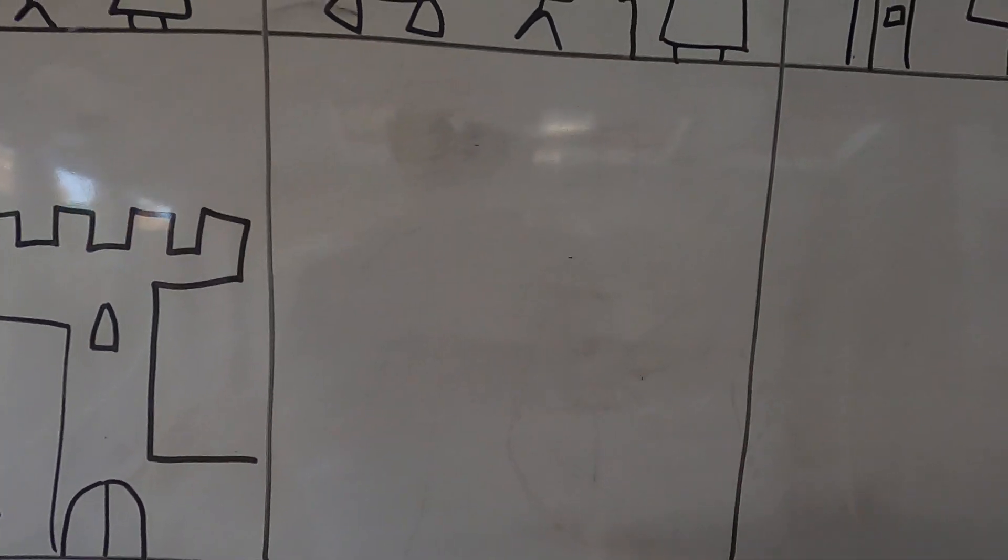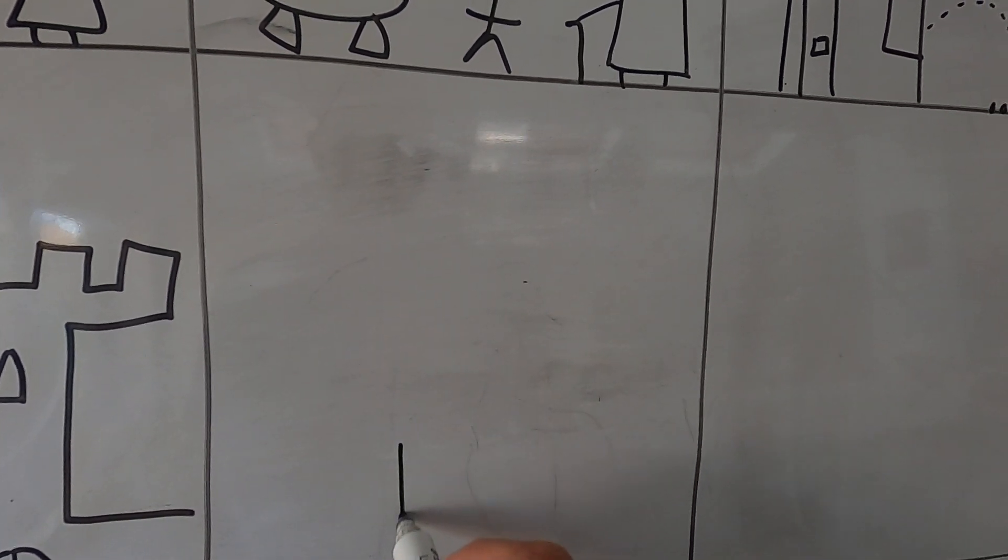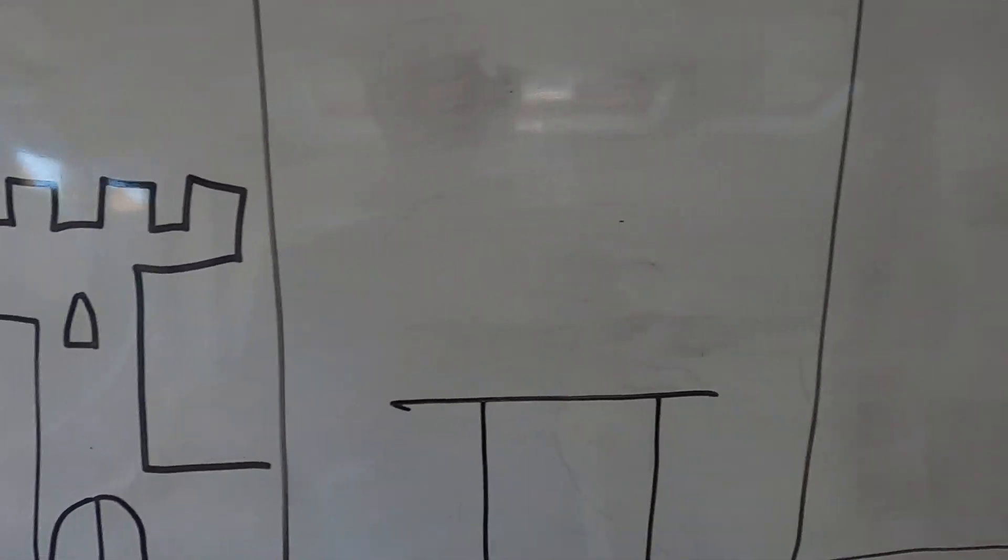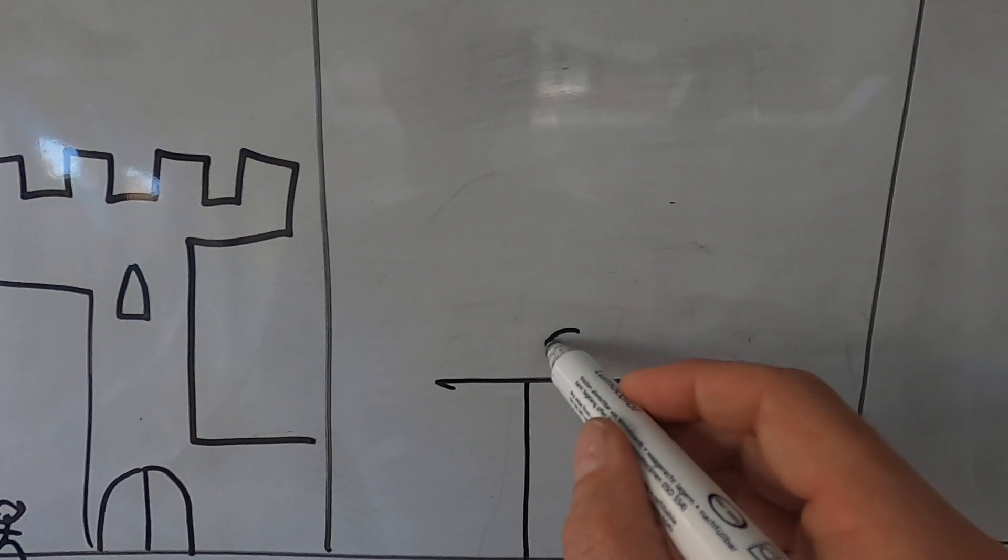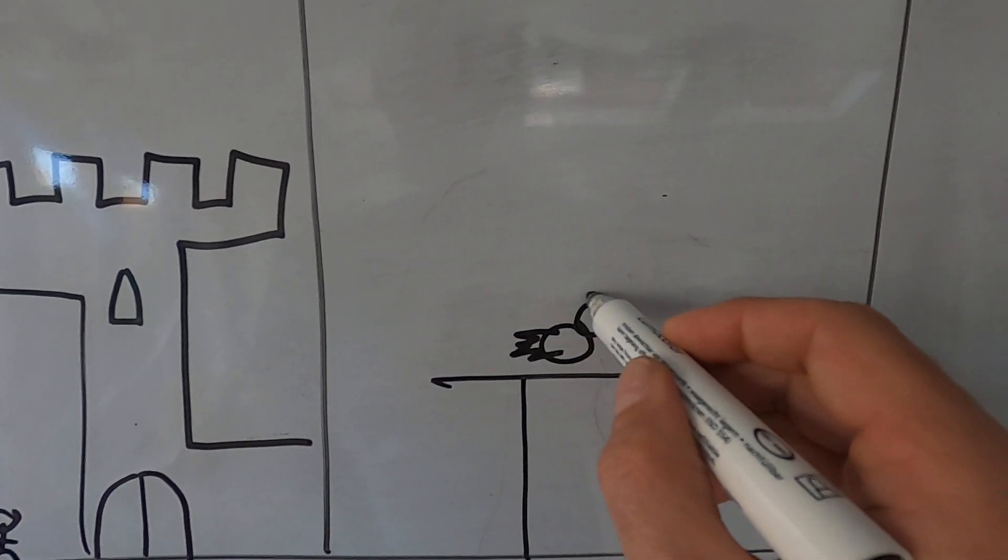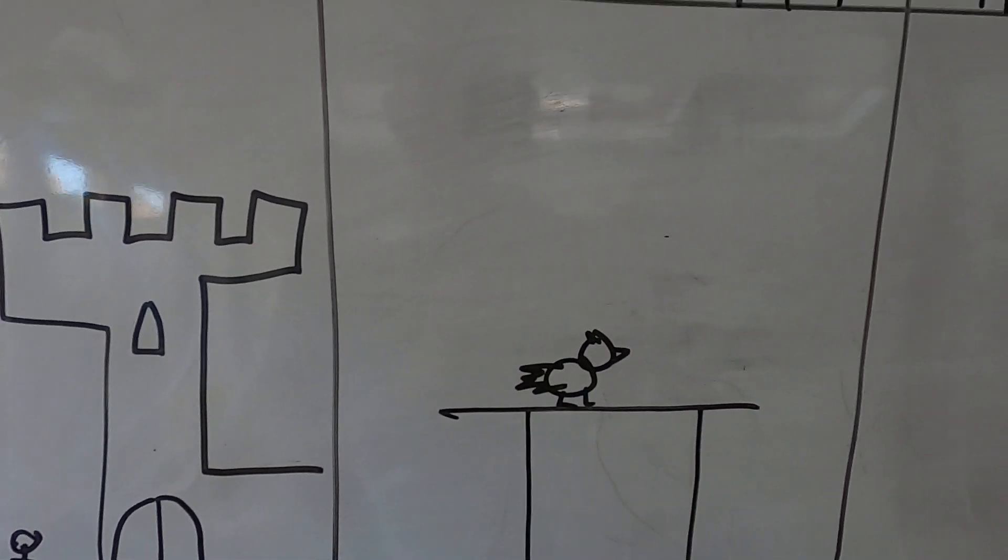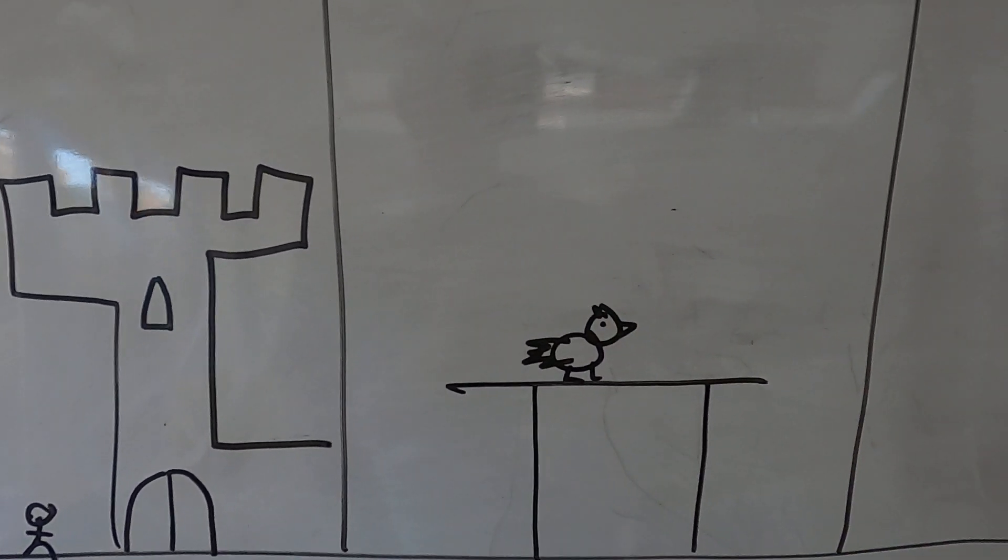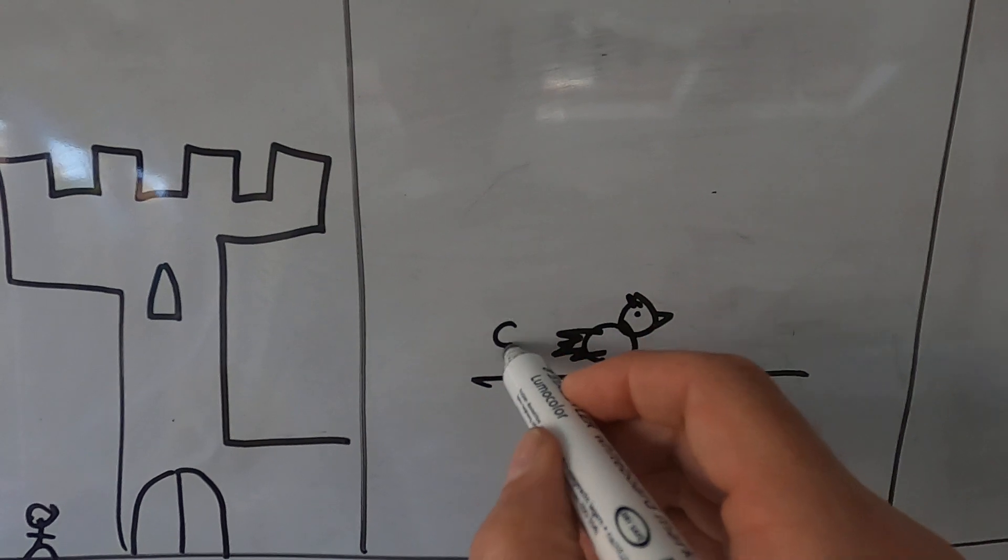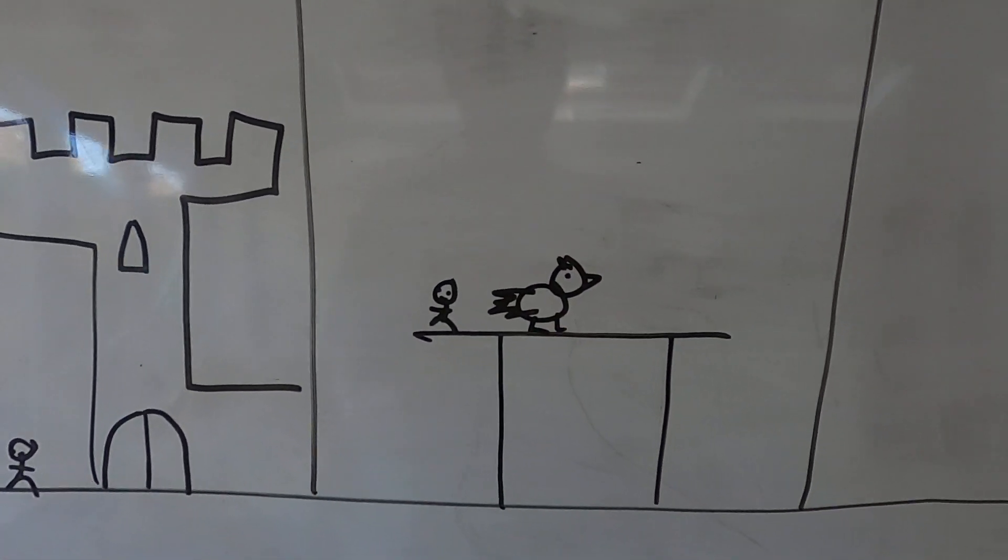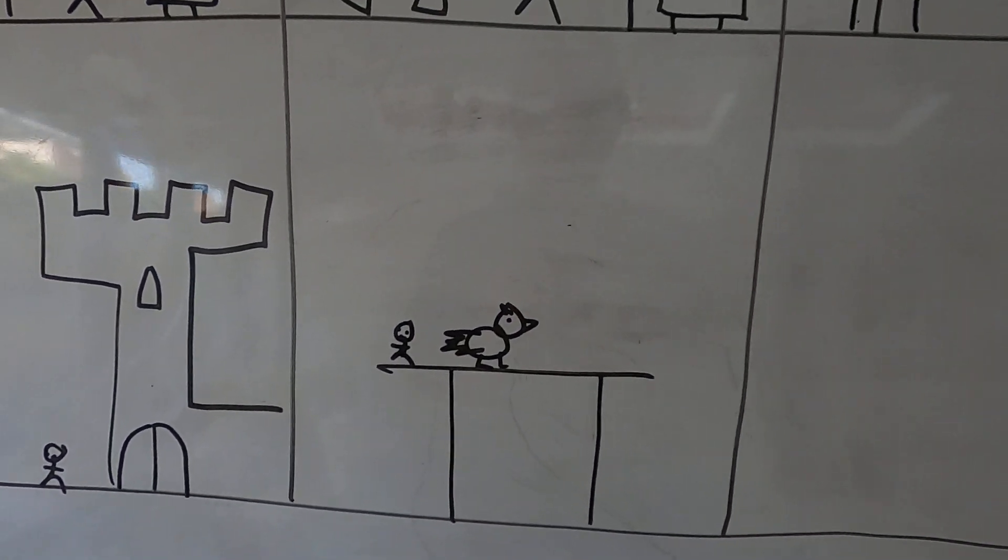And everything was big. And what did he find? A huge table. And on that table was a golden goose. So Jack thought oh that would be fantastic. I'll take the golden goose and take it home. But suddenly.